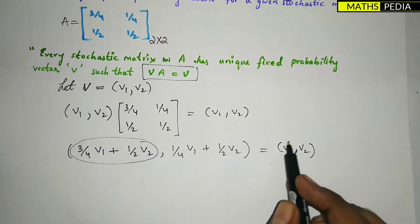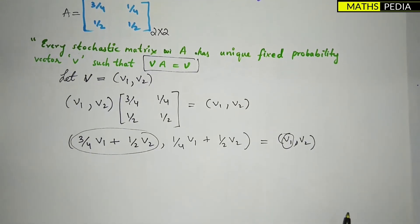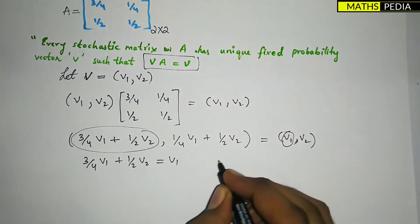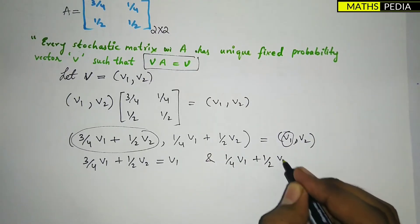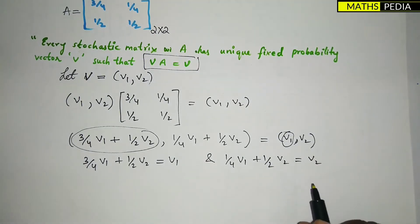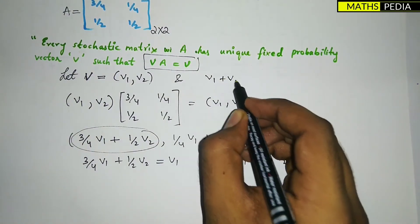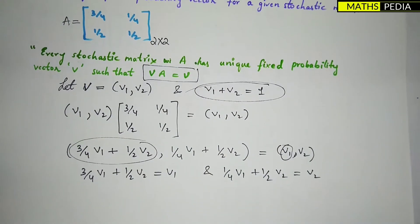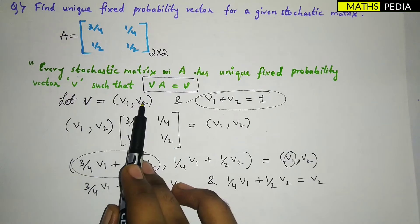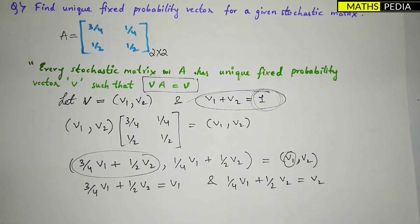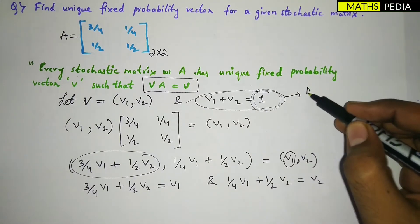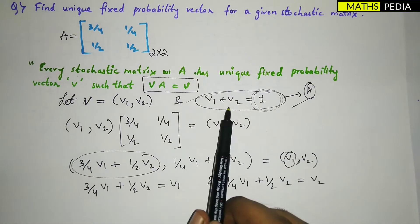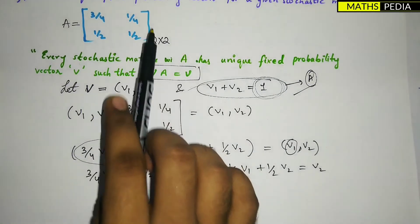Now the first component equals V1 and the second equals V2, giving us two equations. Also remember: whenever you have a probability vector, V1 plus V2 must equal 1, because the elements of a probability vector must sum to unity. So from the first equation: (3/4)V1 + (1/2)V2 = V1, and we also have V1 + V2 = 1.